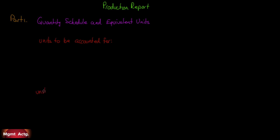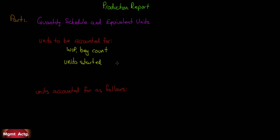When we get to part two and part three, we'll find it's dollars to be accounted for, and part three is dollars accounted for as follows. So the production schedule has four subheadings: units to be accounted for, followed by units accounted for as follows, followed by dollars to be accounted for, followed by dollars accounted for as follows. Units to be accounted for includes work in process beginning count and the units started in production that month — there'll be a total.